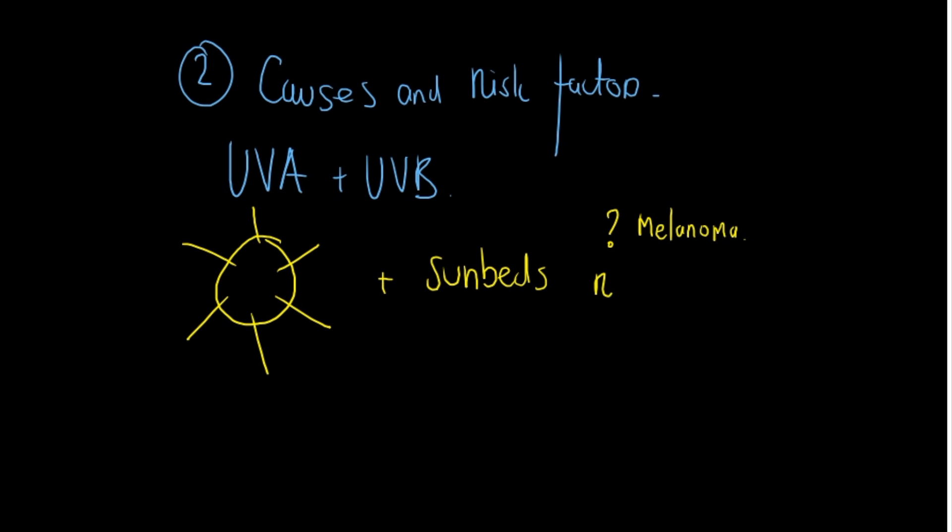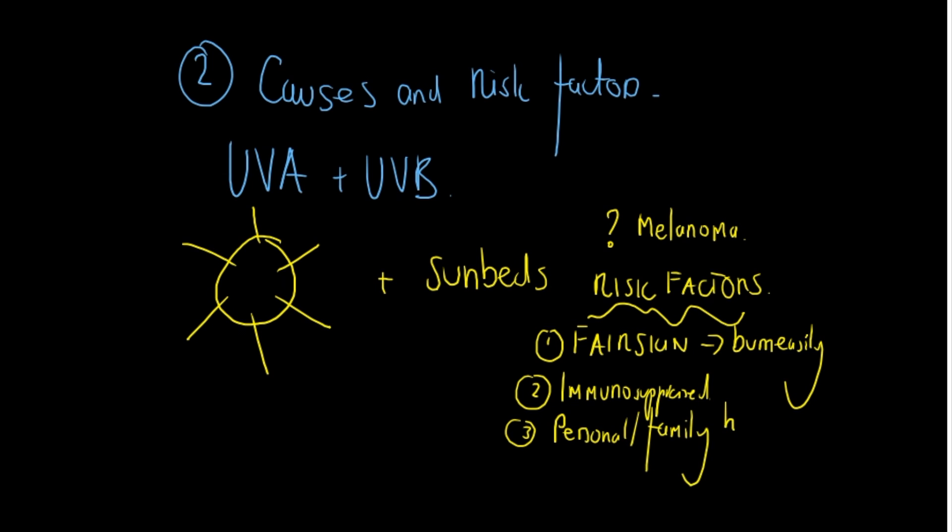Now you need to look at certain risk factors. So these are things that make that person more likely to develop a melanoma. The first one is fair skin or light skin, people who burn easily. The second issue is is the person immunosuppressed. Do they have a personal or family history of melanoma? Other risk factors include conditions such as xeroderma pigmentosum or certain genetic conditions that predispose people to melanoma.